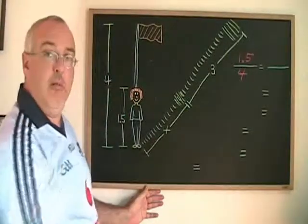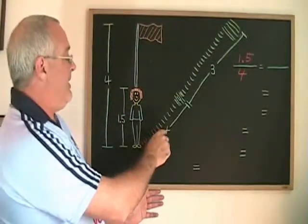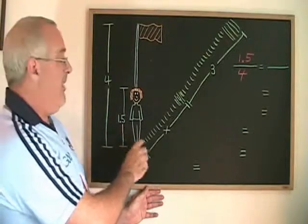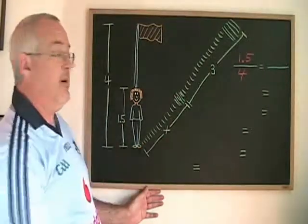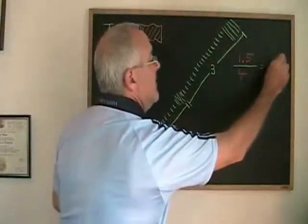The x, which is what we're looking for, has to be together with the 1.5 because they are two sides in the smaller triangle. So I'll put the x here on the top.